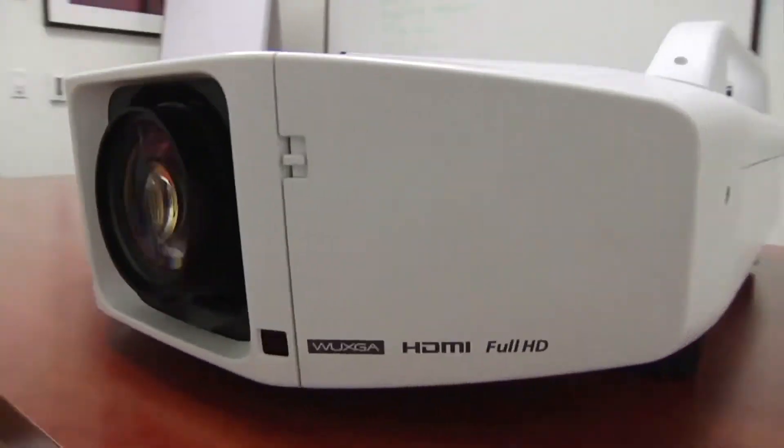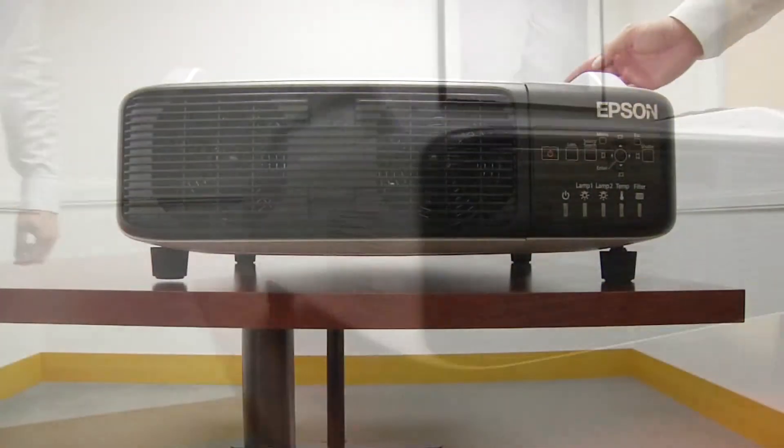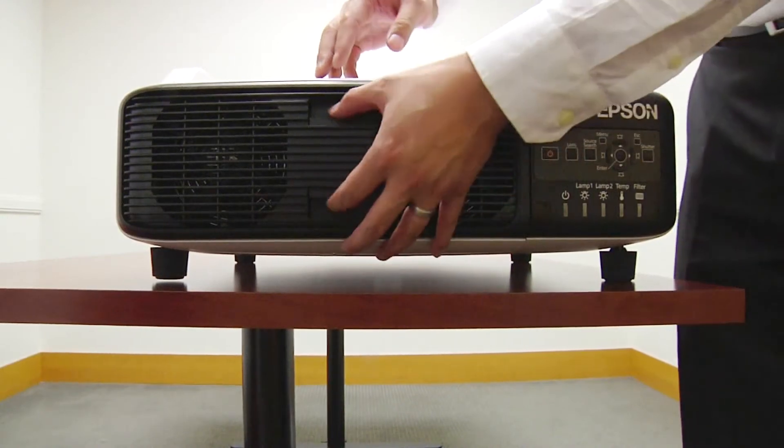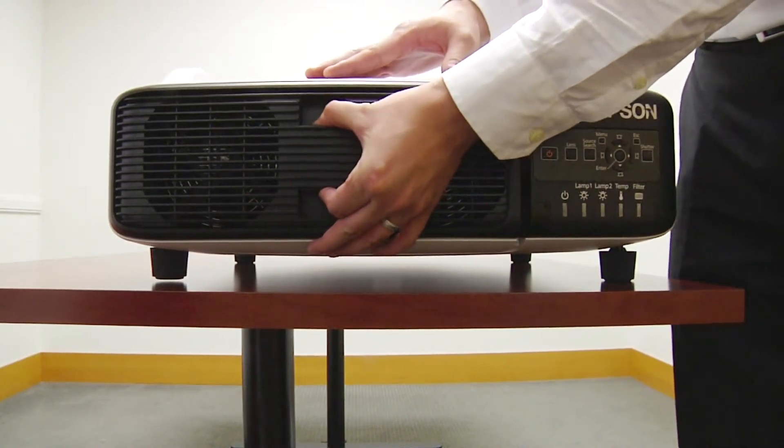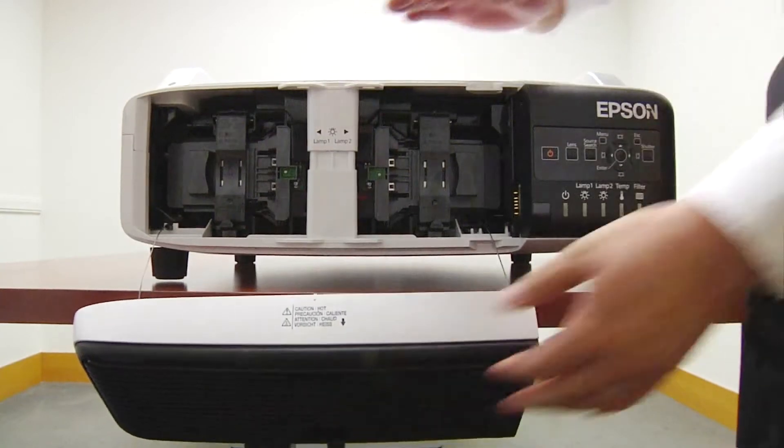In front of me, I have a Pro Z8000WU. To access the lamp, go to the rear of the projector, press down on the two buttons on the panel, slide to your left, and let the panel hang loosely.